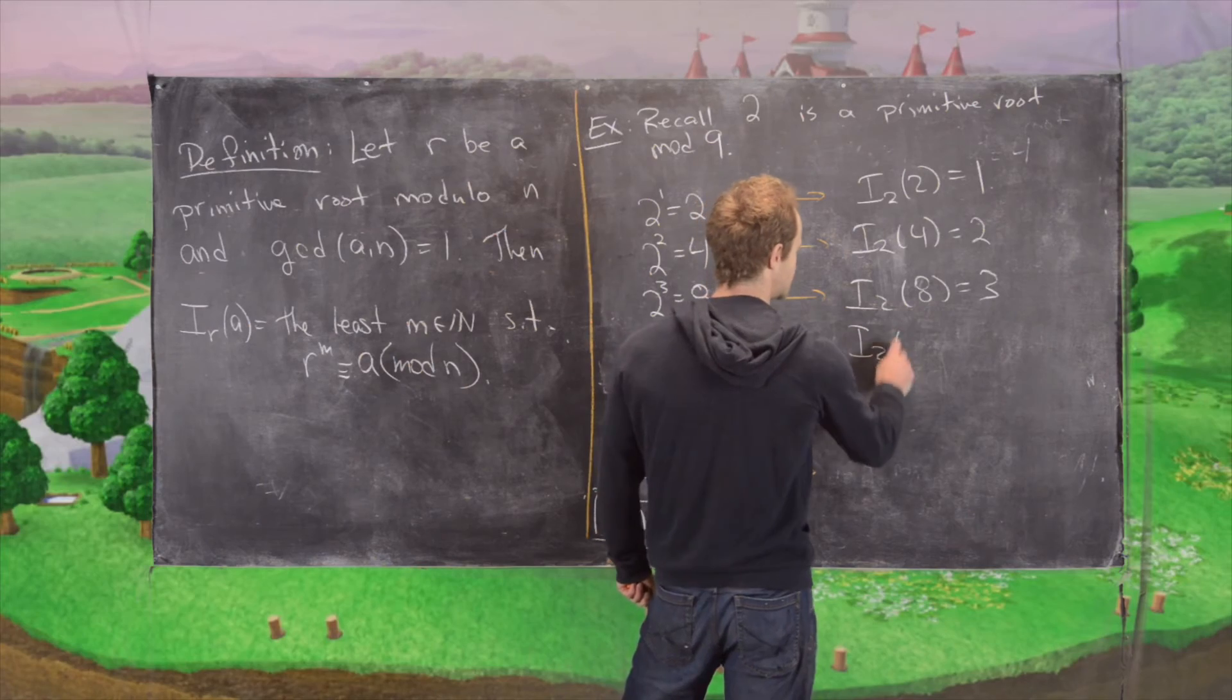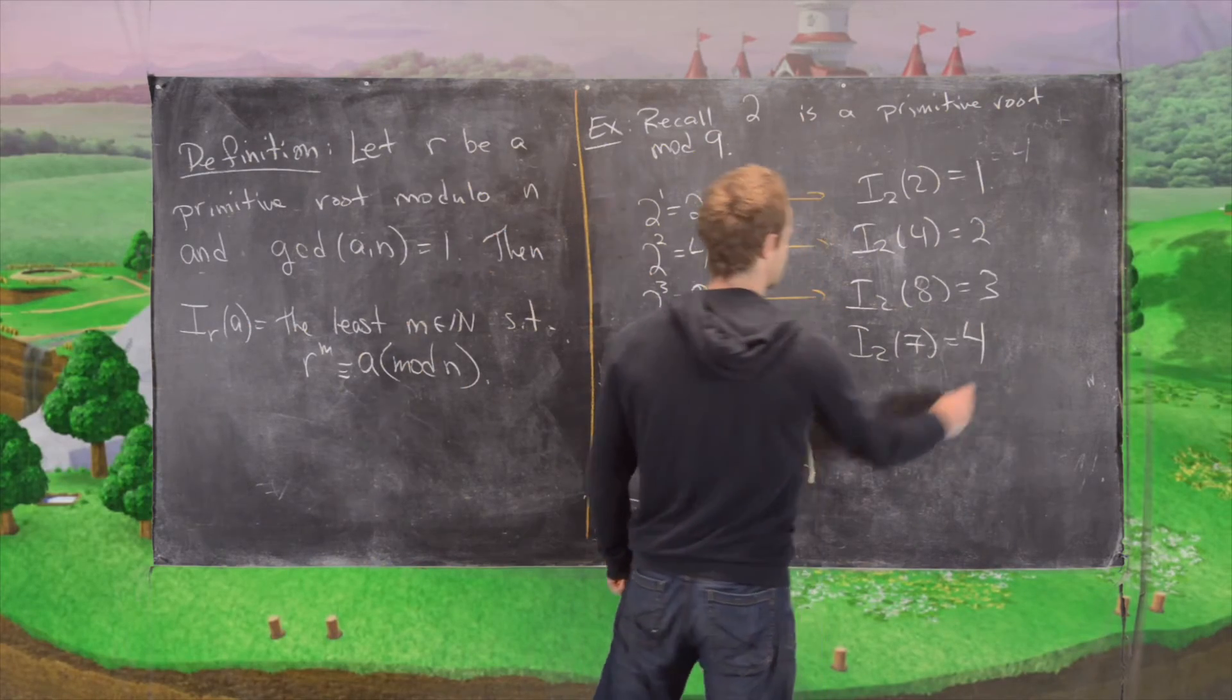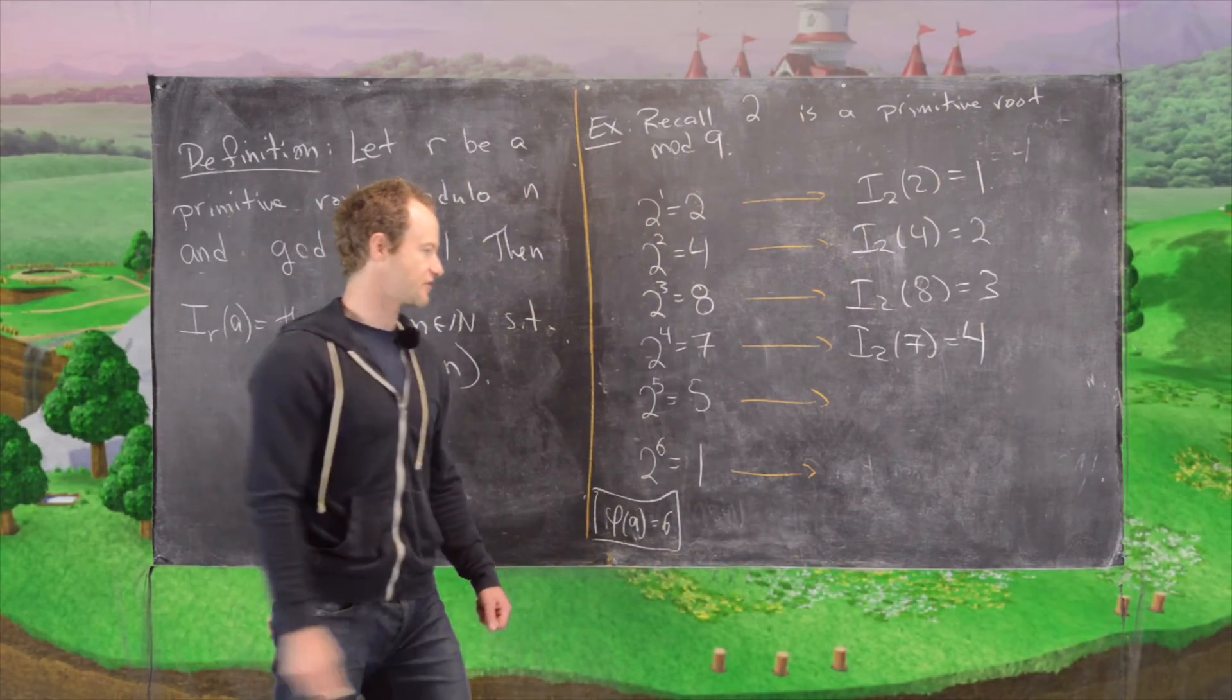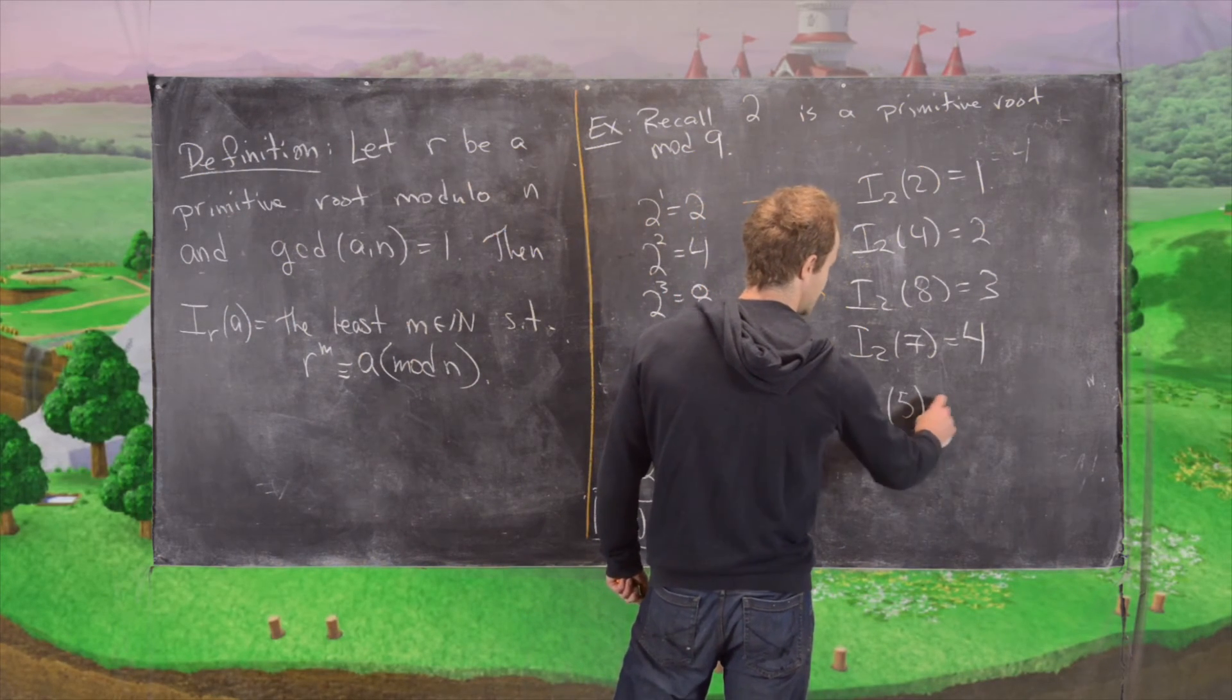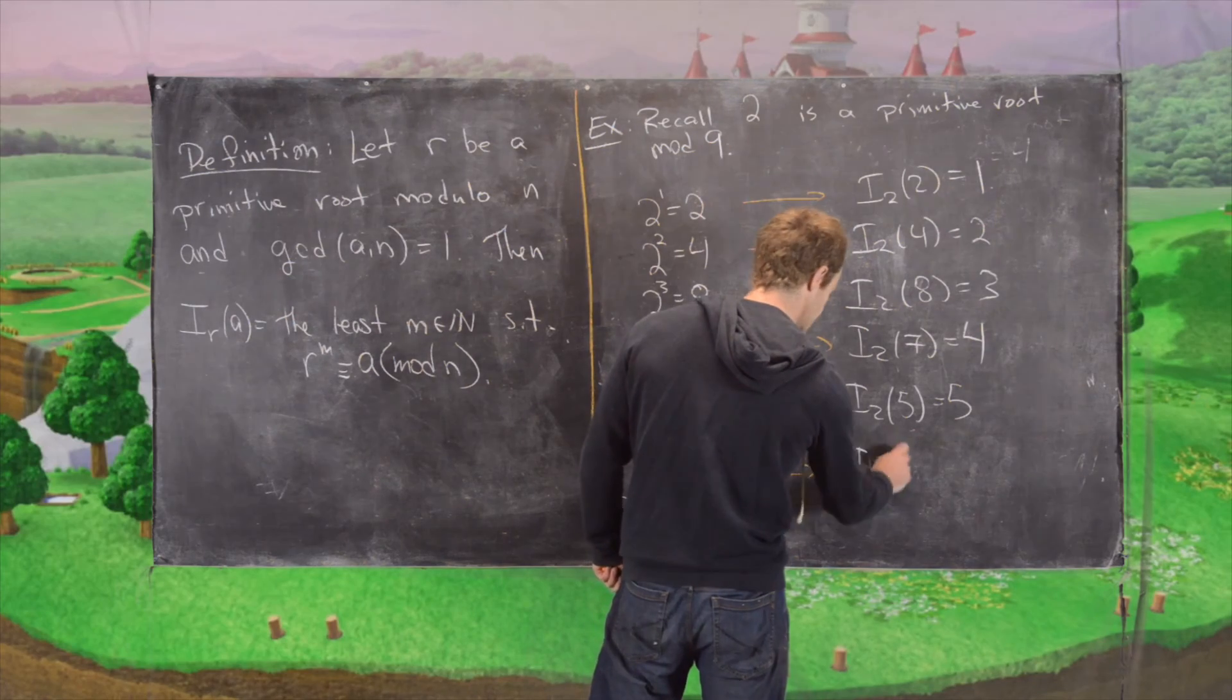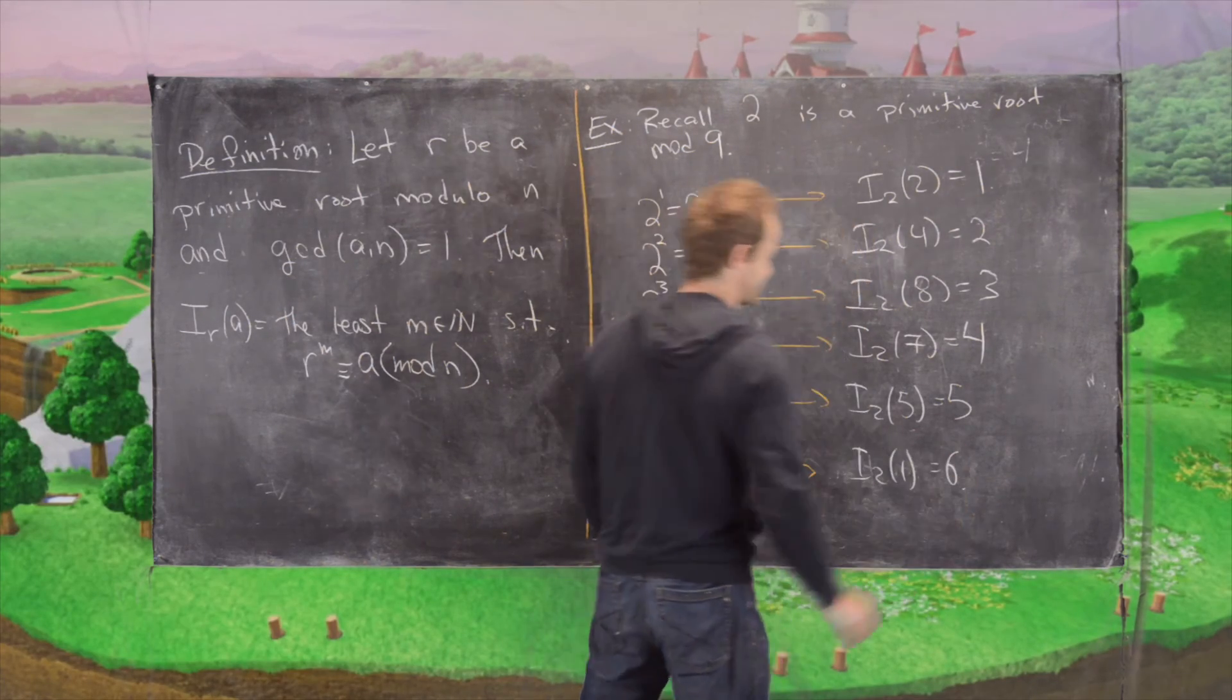So notice since we're working mod 9 this just looks like normal arithmetic. And then the index 2 of 7 is 4. That's rewriting that equation. The index 2 of 5 is 5. And finally the index 2 of 1 is 6.